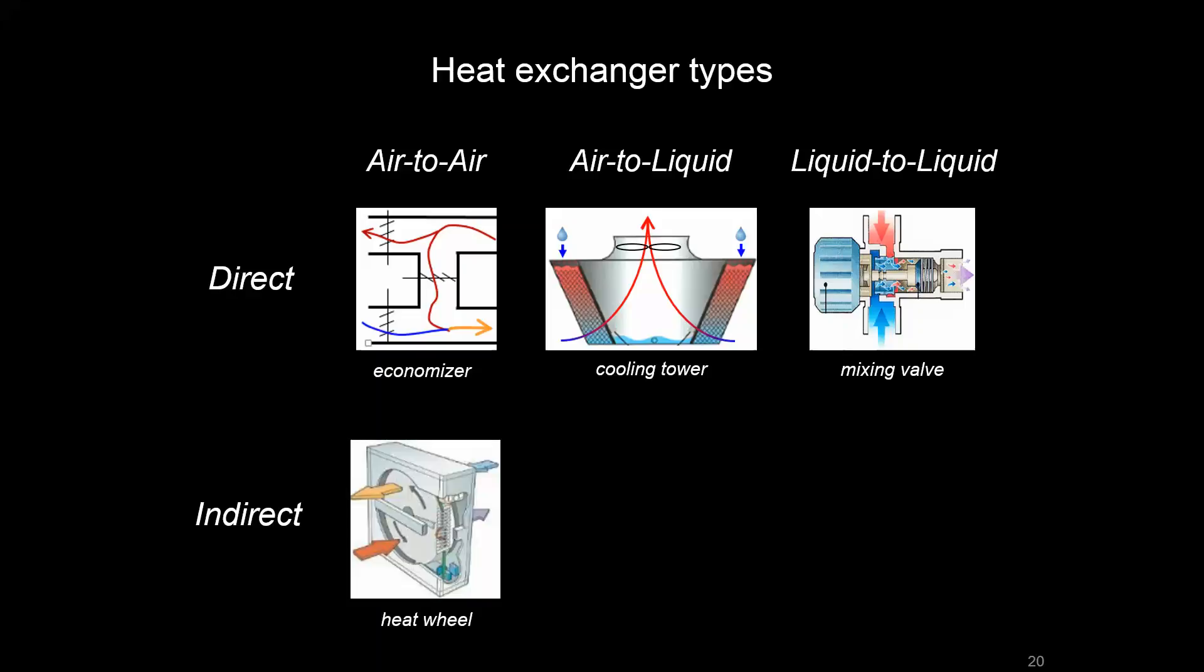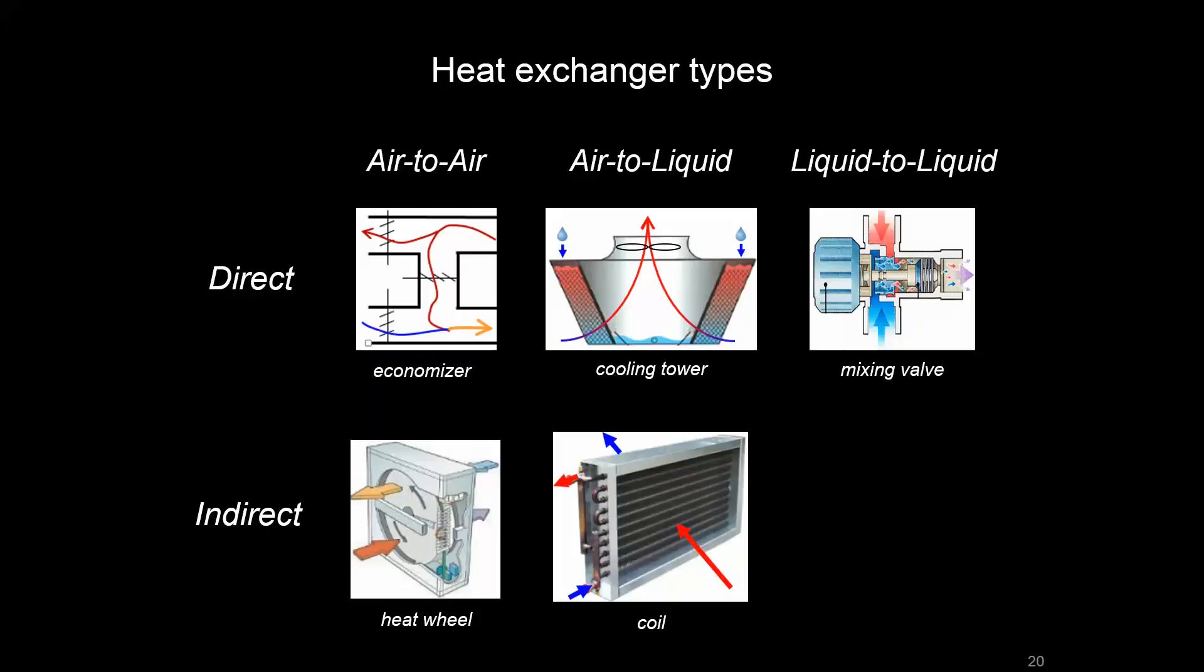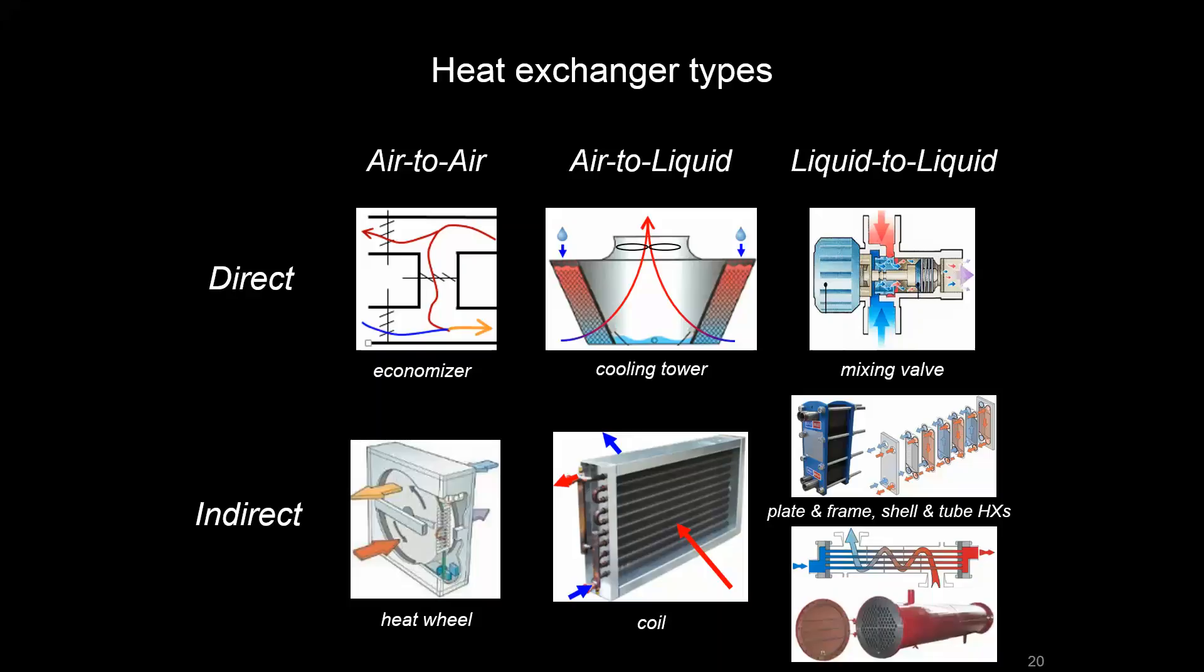And when we get into indirect heat exchangers, we can imagine a heat wheel that might be sitting at the inlet of an air handler, so that as you have exhaust air blowing across and outside air coming in from the other side, we have a heat exchanger between those two without any direct contact. Air-to-liquid would be something like a water coil or a DX coil. Liquid-to-liquid heat exchangers come in a variety of forms, such as plate-and-frame or shell-and-tube heat exchangers.